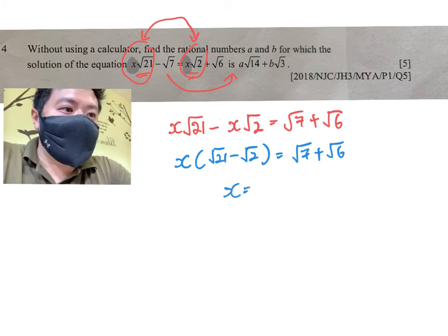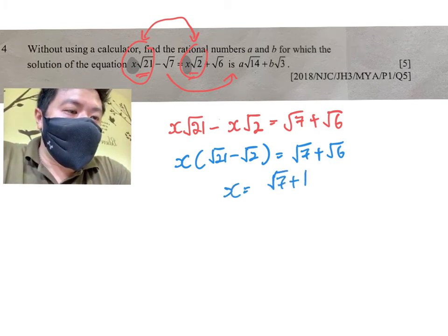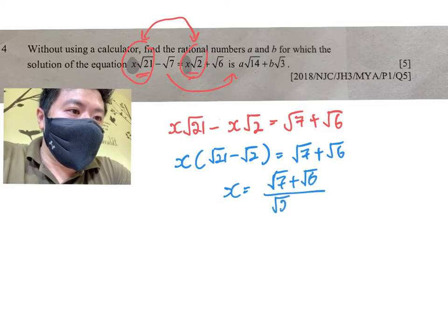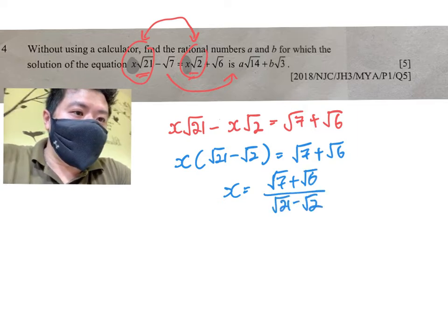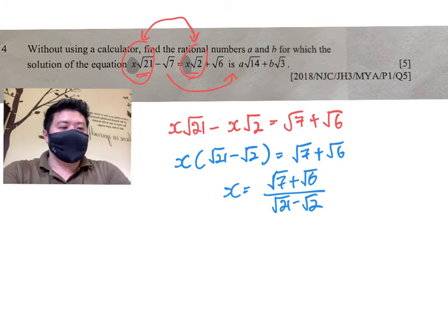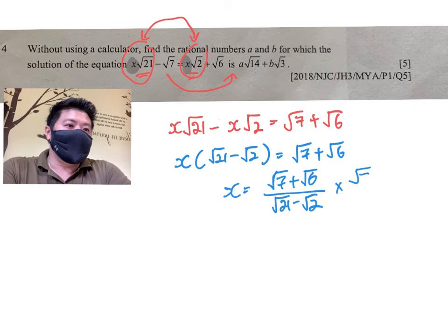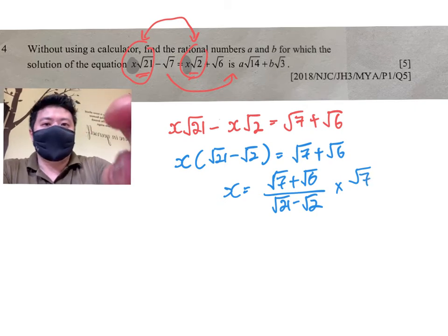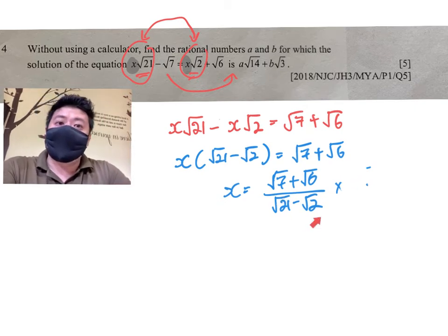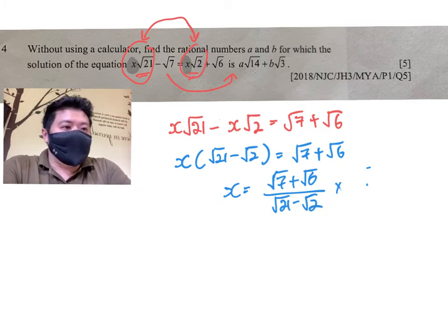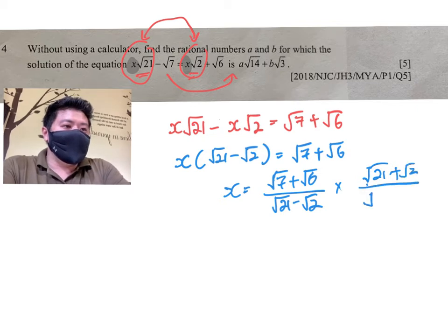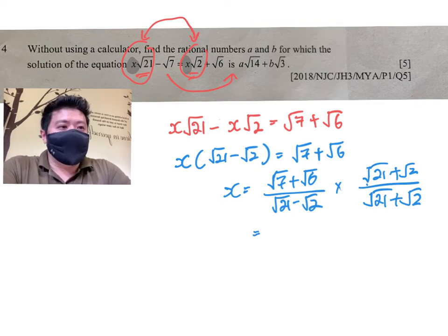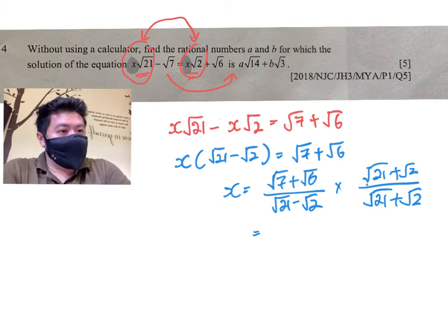If you make X the subject, you have X here. So with this, I think you are quite close to getting your answer. Solving for X is not difficult. You probably need to recognize that there's a conjugate in your denominator and you need to push out the conjugate to your terms here in order to rationalize your denominator.